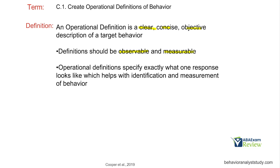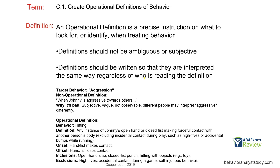Definitions should be observable and measurable — we're always targeting behaviors we can consistently observe and measure. Operational definitions specify exactly what one response looks like, which helps with identification and measurement of behavior. When we create an operational definition, we're creating an instruction, telling somebody: this is the behavior, and this is what you're going to look for when treating that behavior. Definitions should not be ambiguous or subjective, and should not be open to interpretation.